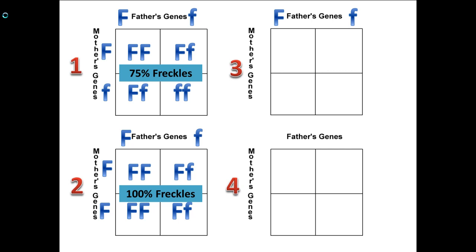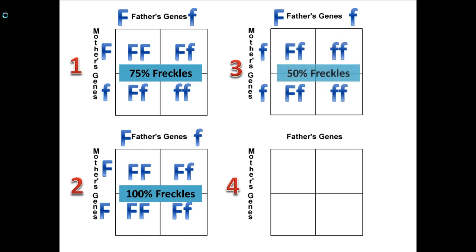In example number three, the father is heterozygous and the mother is homozygous recessive. Looking at the possibilities, we end up with 50% of the kids having freckles and 50% not. In this example, dad has freckles, mom doesn't, and half the kids have freckles, half don't.